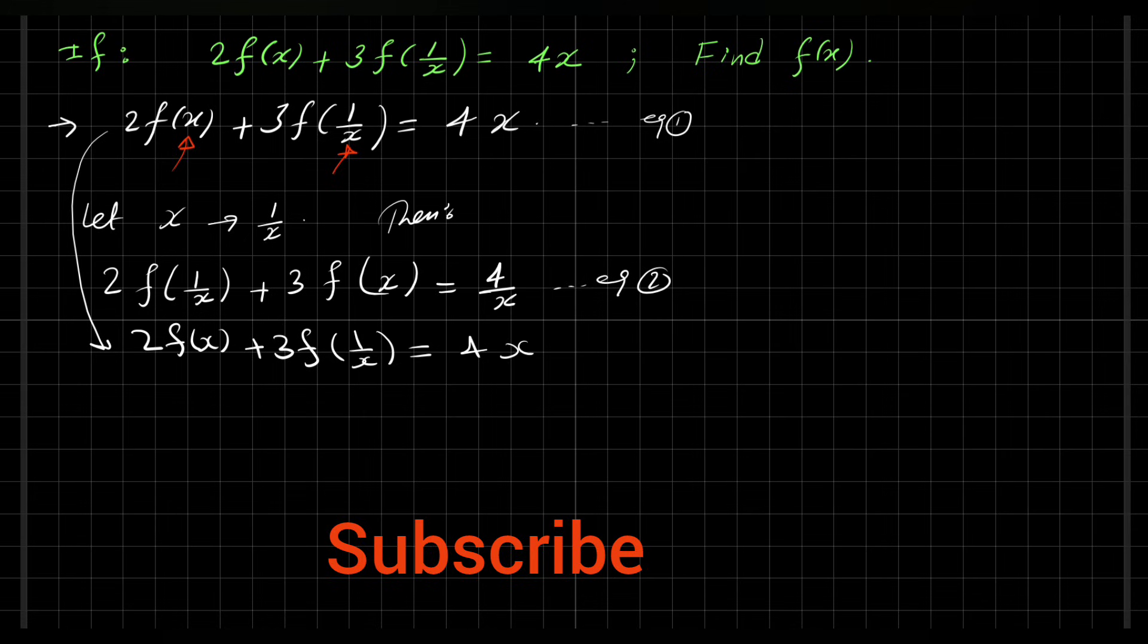Now the question is to find f(x). So we have to eliminate f(1/x). Here we have 3 and up we have 2. So to eliminate f(1/x) we have to multiply.